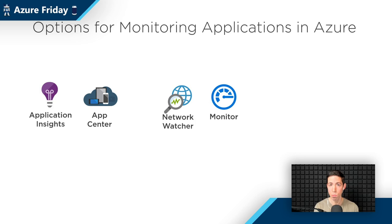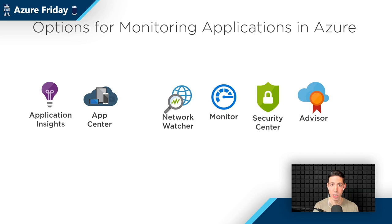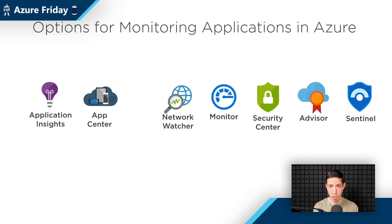Next is Security Center, which is a monitoring service. It actively monitors all of your services and tells you which services are less secure than others, and it suggests things you can do to improve security. And then an extension of that is Azure Advisor, which includes those recommendations from Security Center but also monitors all of your services and comes up with other recommendations — not only security, but also for performance, availability, and costs. And the final service is Azure Sentinel, a security-based service that can go further than Security Center.